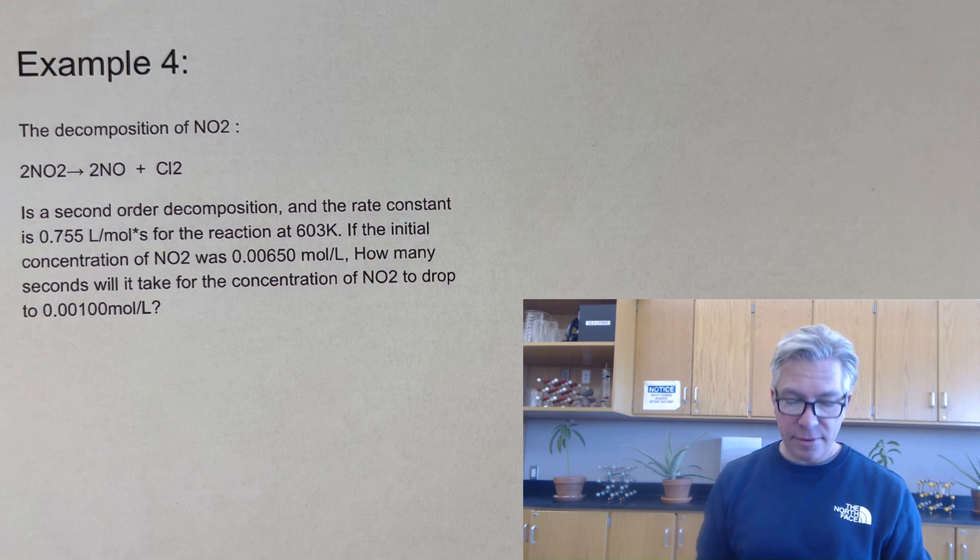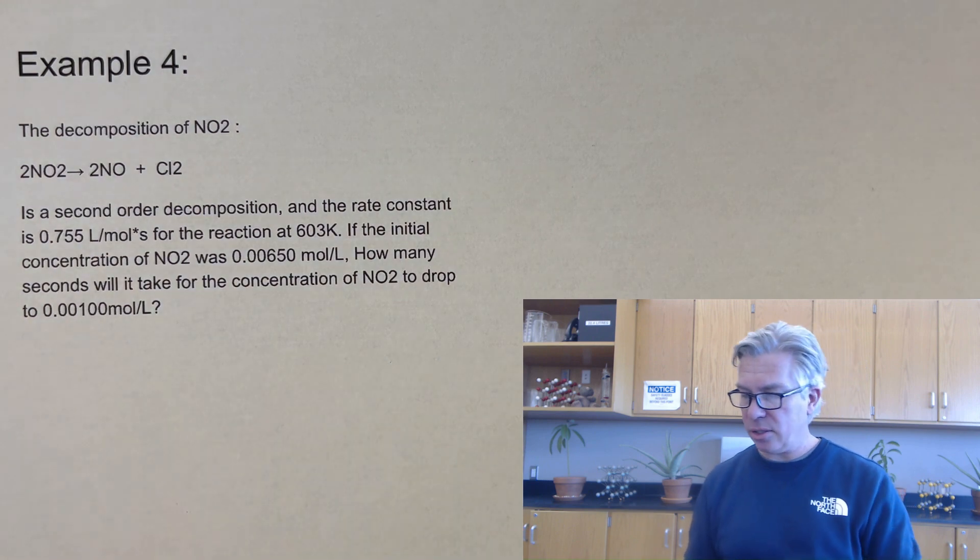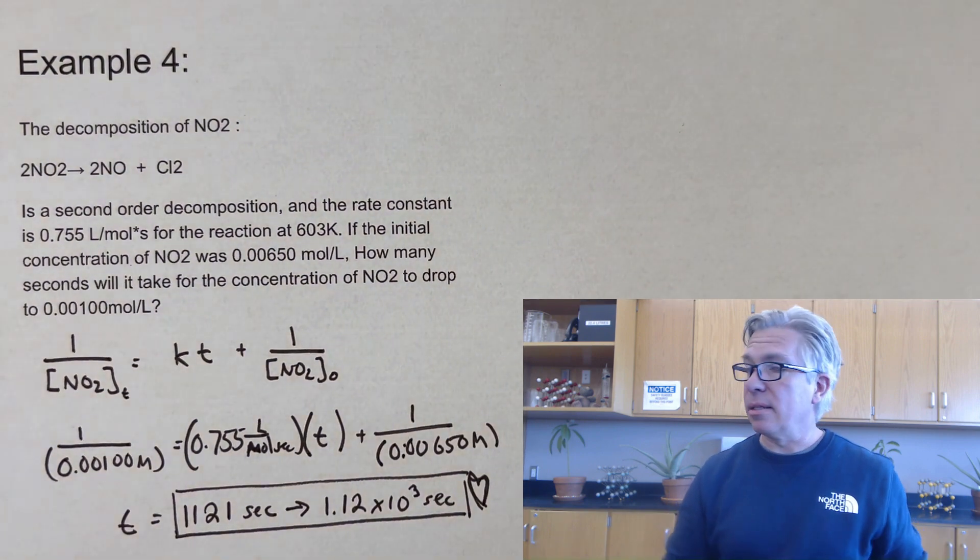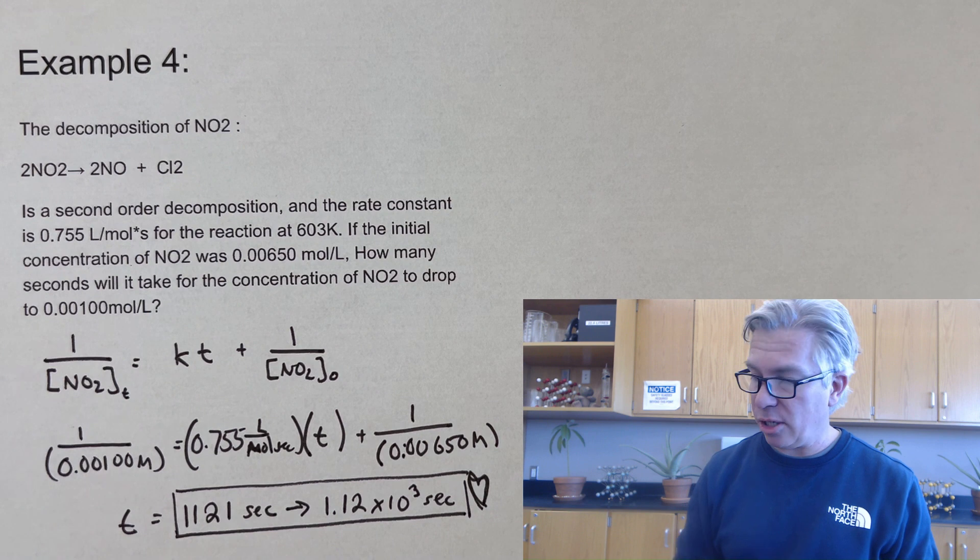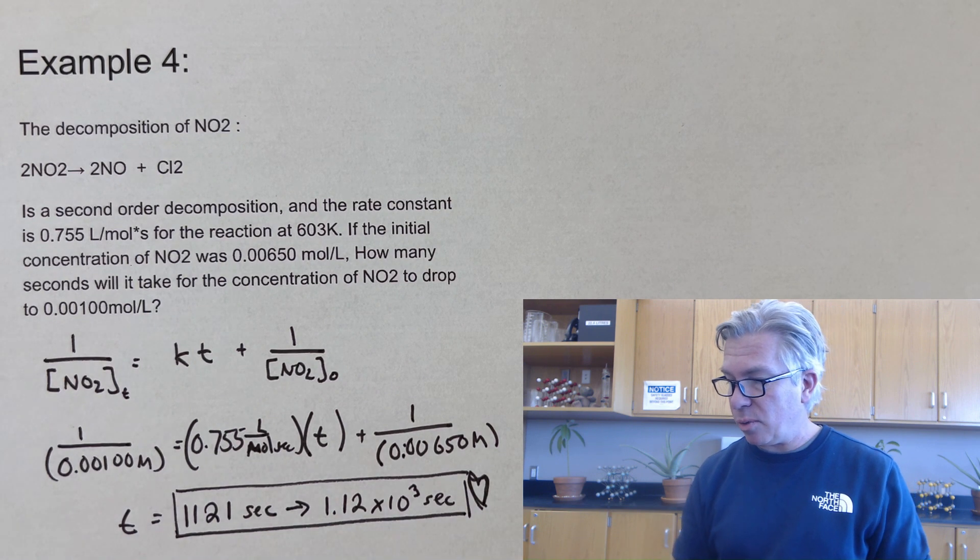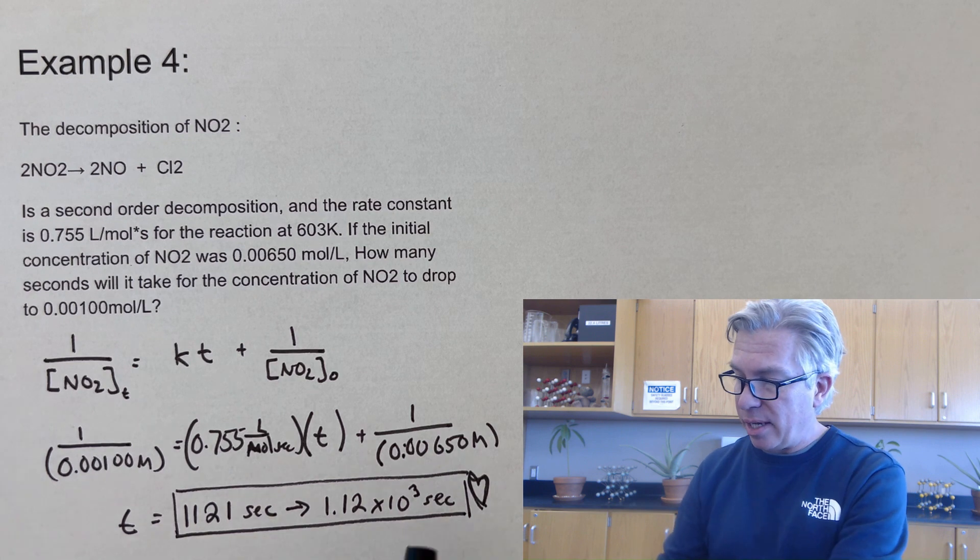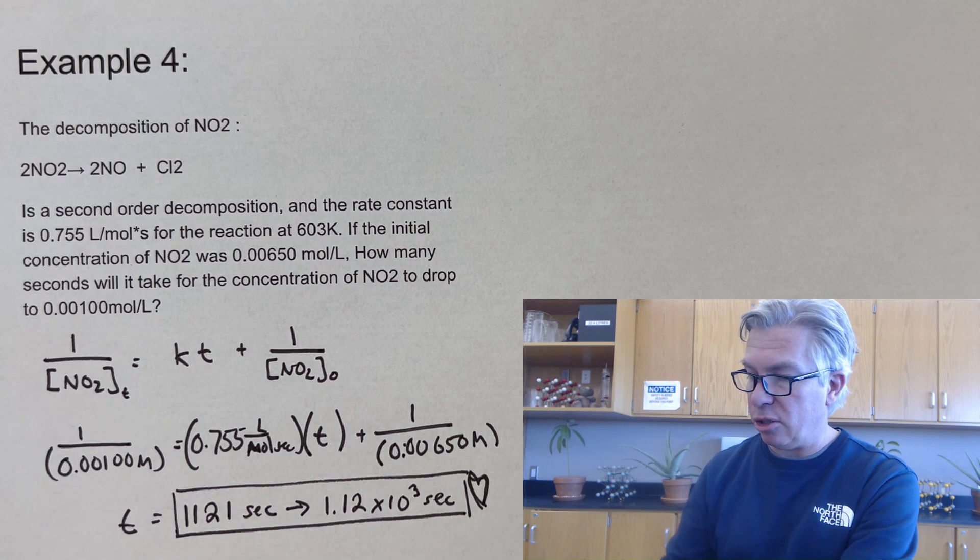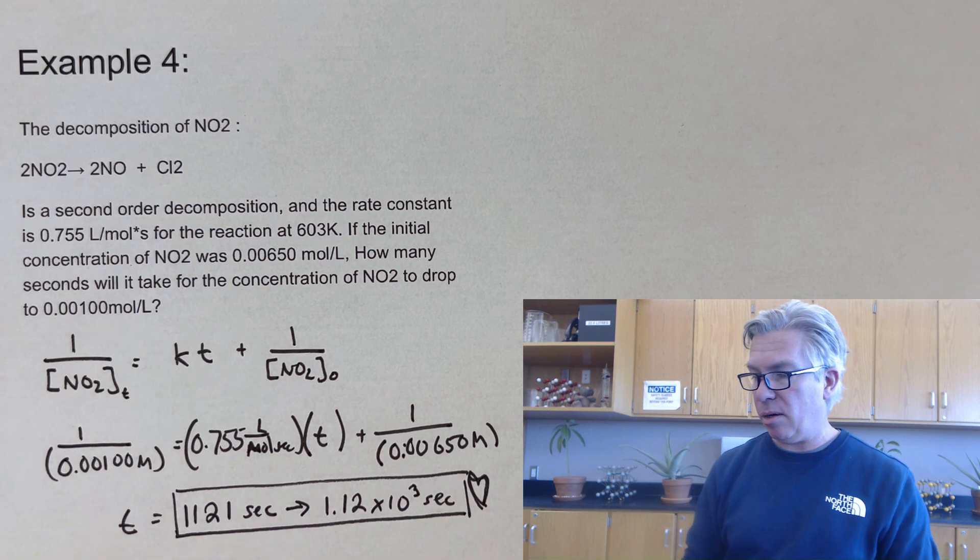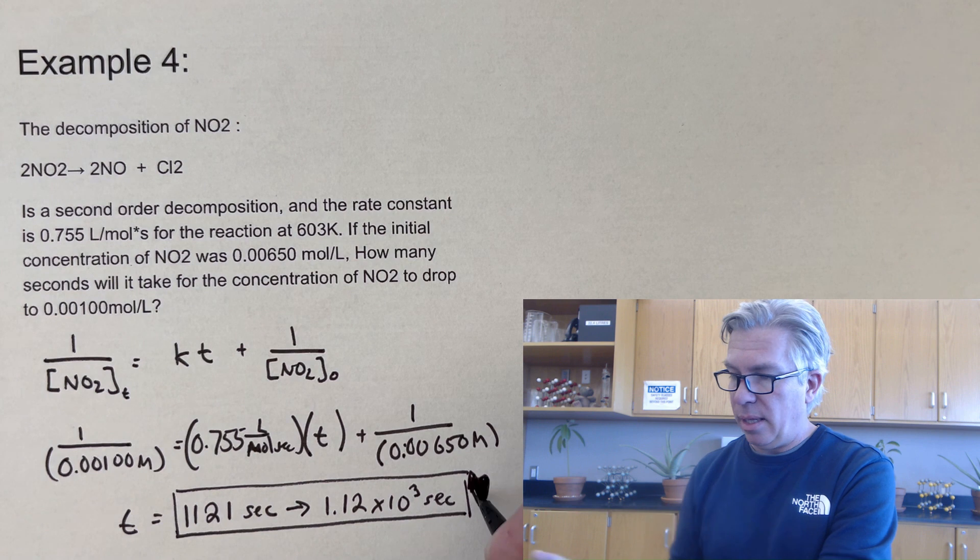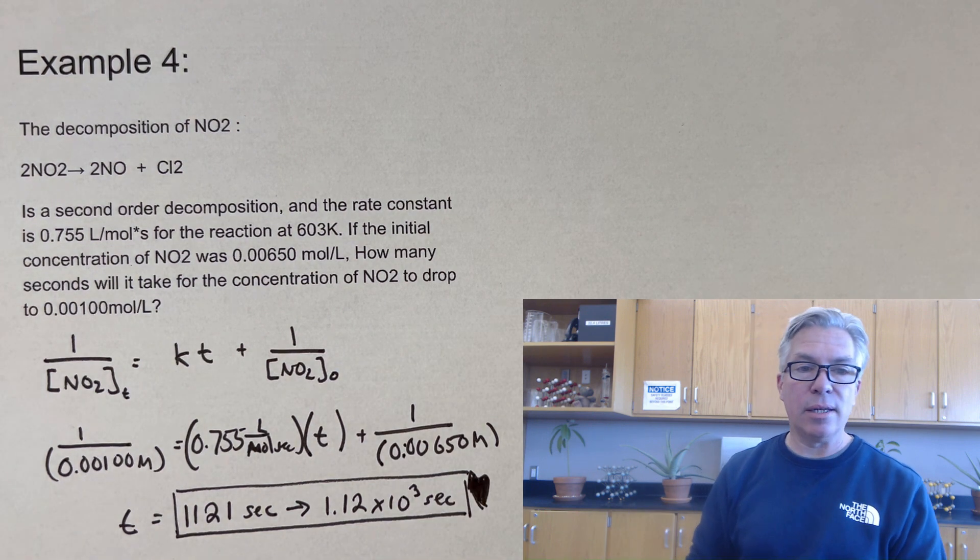All right. And if you were able to get an answer of just over 1,100 seconds, then congratulations. You did a great job on this one. I came up with exactly 1121 seconds, but because I only had three digits in these answers, I actually just kept three and put it in scientific notation, but either of those would probably be okay. And that is how we use the second order integrated rate law.